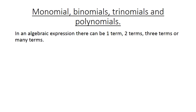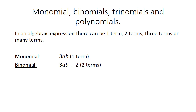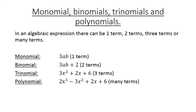Now we have monomials, binomials, trinomials, and polynomials. In an algebraic expression there can be 1 term, 2 terms, 3 terms, or many terms. A monomial has 1 term. A binomial has 2 terms, separated by a plus or a minus. A trinomial has 3 terms. And a polynomial has 4 or more terms.